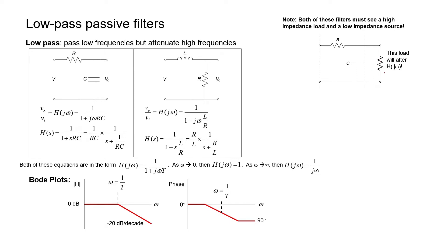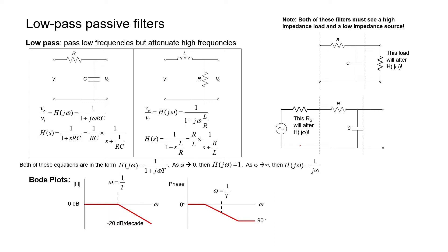The load itself can alter the characteristics of the filter, except in the case where the load has a very large resistance. If the resistance here is large relative to the resistor and also large relative to the reactance of the capacitor — or 1 divided by omega C, which also has units of ohms — then it's not going to affect the corner frequency very much. But the minute you start making that resistor too small, the filter might not work as designed. The same thing can happen on the input side: if you have a source with a non-negligible impedance, this resistor will add to the resistor in your filter and alter the corner frequency. Both sources and loads can affect the performance of a filter, and we'll see how to get around that limitation in another video.